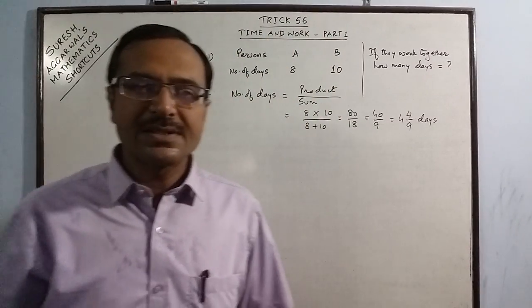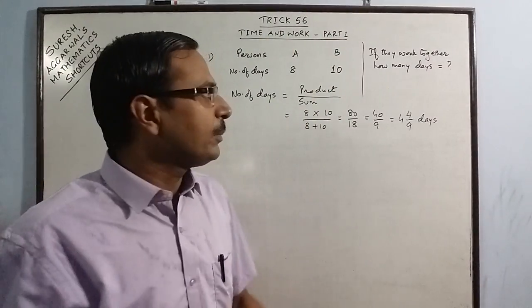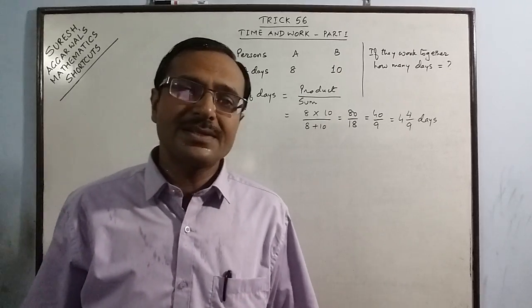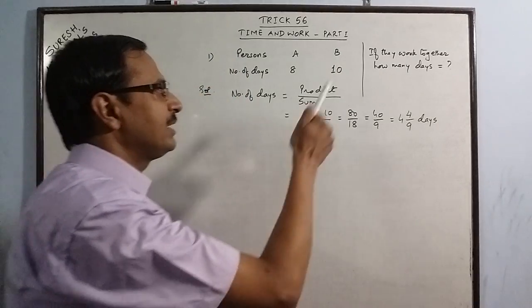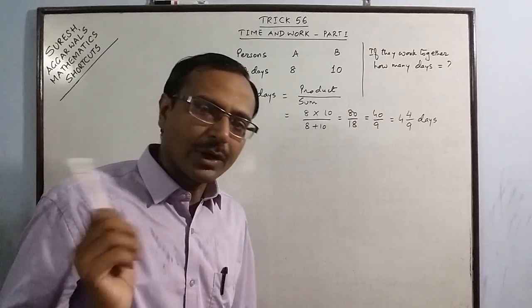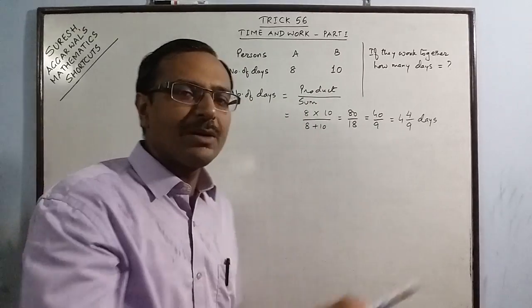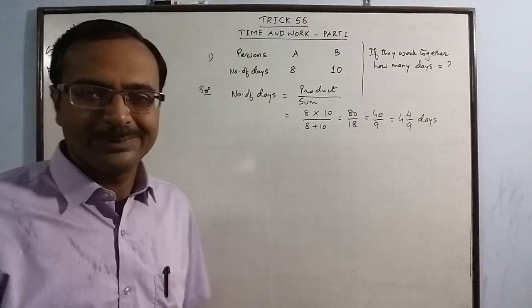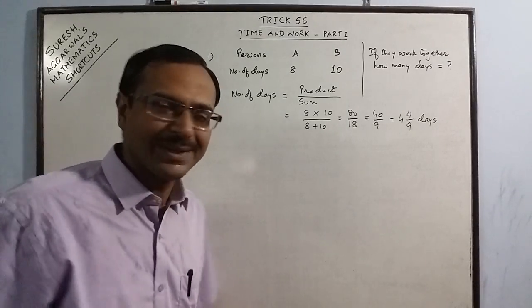No high concepts, no big concepts, no simplifications, no remembering the rules of reciprocal rule and rule of flip. Just remember one concept - when they work together, the number of days will be the product of the individual number of days divided by the sum of the individual number of days and that gives you the answer. This is the first type of question.